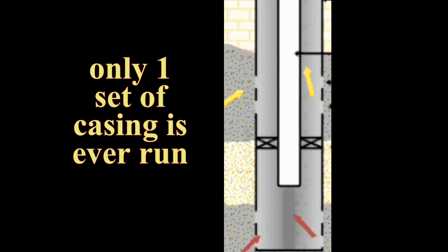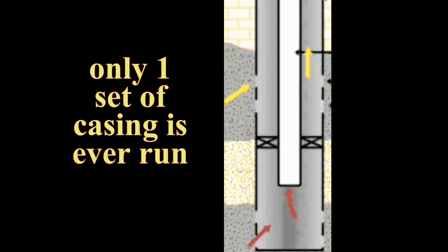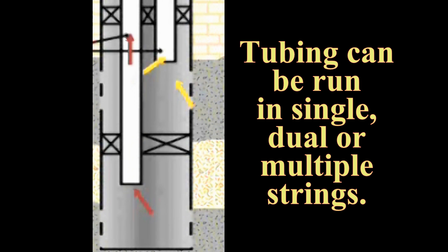Keep in mind also that although only one set of casing is ever run, tubing, because of its smaller size, can be run through the casing in single, dual, or multiple strings.